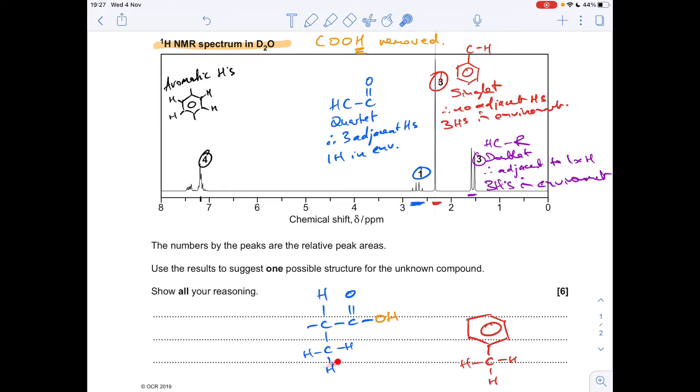So they're not in any special environment, so they appear at this range. There's three in the environment, area three. They're adjacent to a single hydrogen, so they would show us a doublet, which is going on here. So if I just overwrite this with the purple pen, and now that kind of ties in with the colour coding.